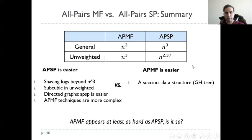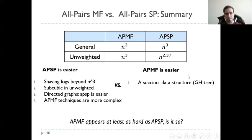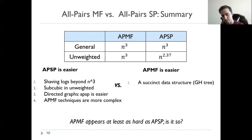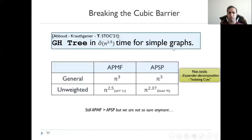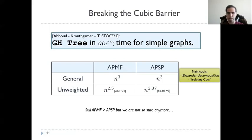To summarize, we have a lot of reasons to believe that APSP is easier and slightly fewer reasons to believe that all-pairs maximum flow (APMF) is easier. So APMF appears at least as hard as APSP. We tried to show conditional lower bounds for APMF but couldn't find any. So indeed, last year we broke the cubic time for simple graphs — we showed that Gomory-Hu tree can be solved in n to the 2.5 time for simple graphs. This doesn't surpass the bounds for APSP, but we're not so sure anymore that APSP is the easier problem.